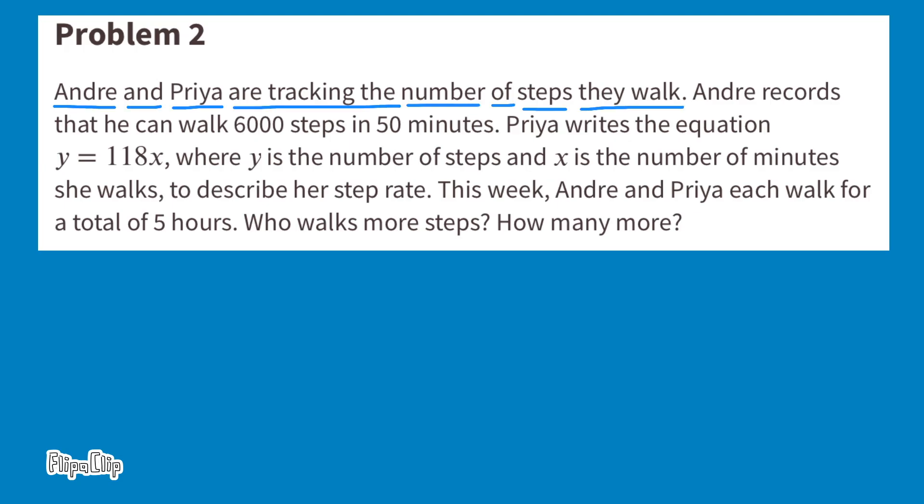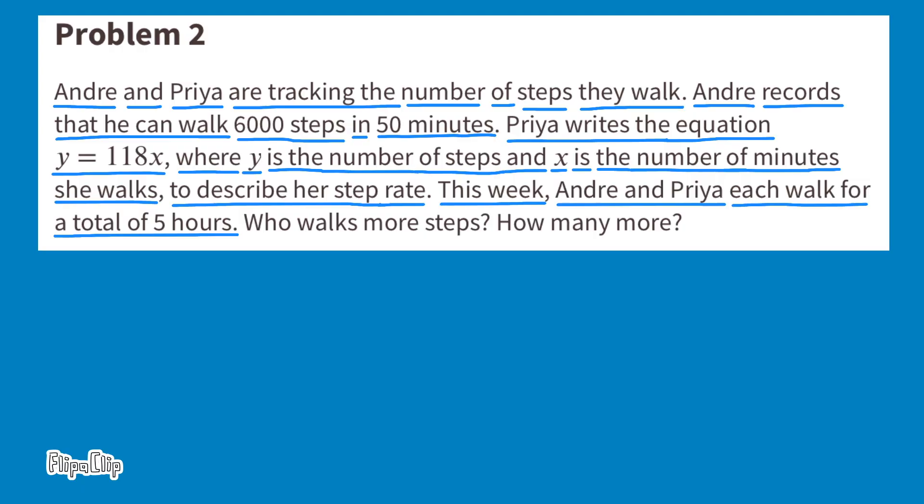Problem number two. Andre and Priya are tracking the number of steps they walk. Andre records that he can walk 6,000 steps in 50 minutes. Priya writes the equation Y equals 118X, where Y is the number of steps, and X is the number of minutes she walks, to describe her step rate. This week, Andre and Priya each walk for a total of 5 hours. Who walks more steps? How many more?